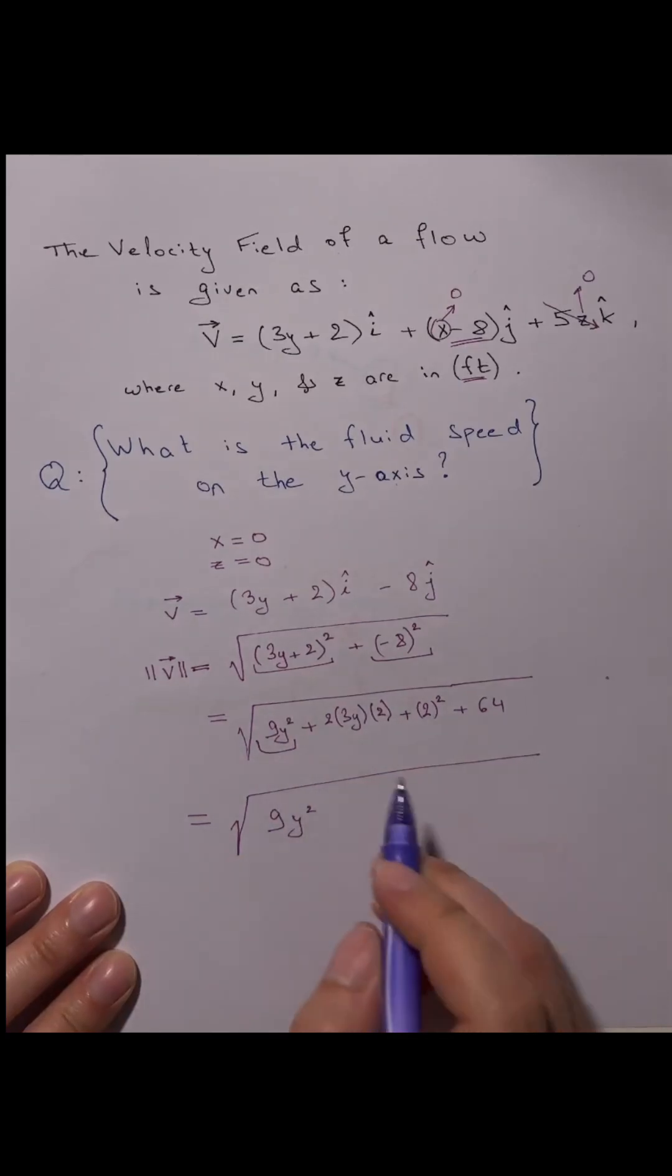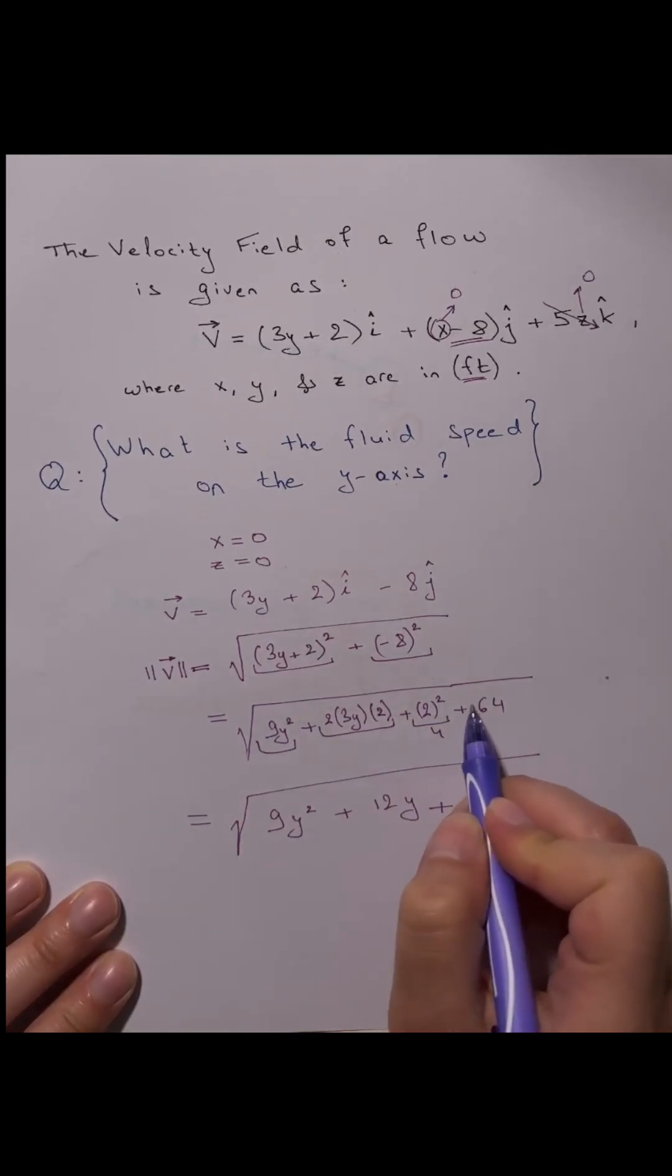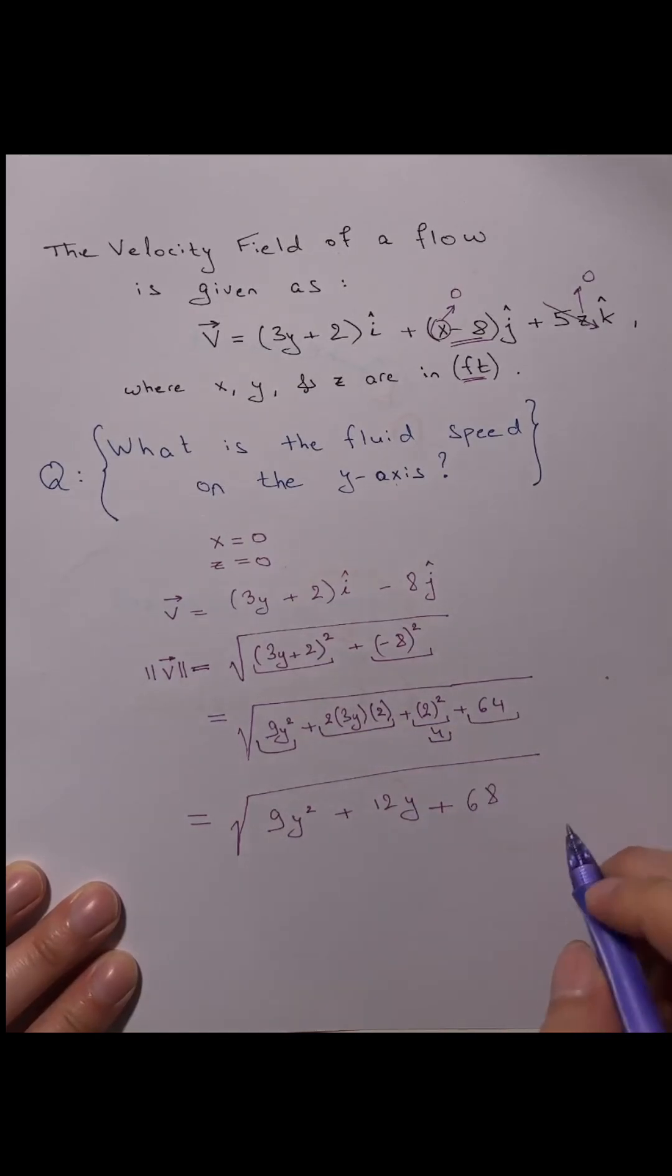Now the speed becomes the square root of 9y squared plus 12y plus 4, and 4 plus 64 is 68. And this is the final answer in feet per second.